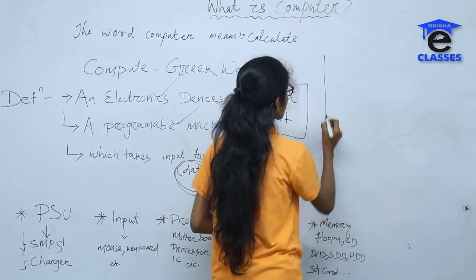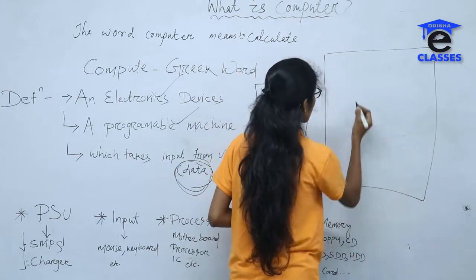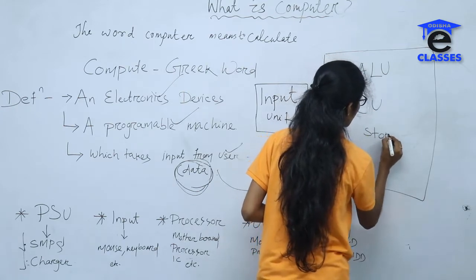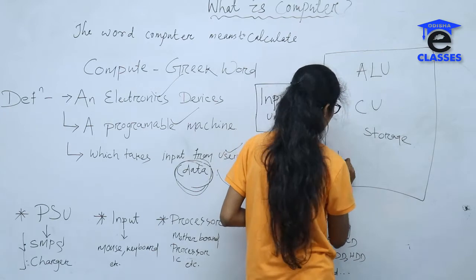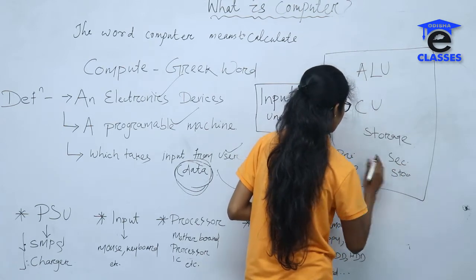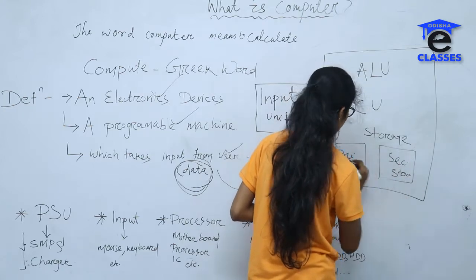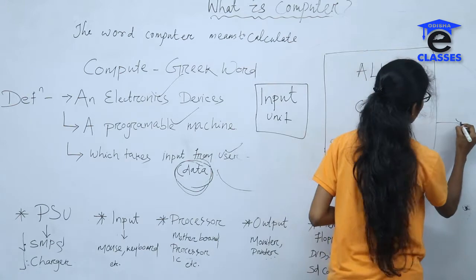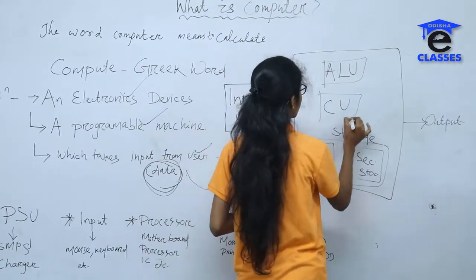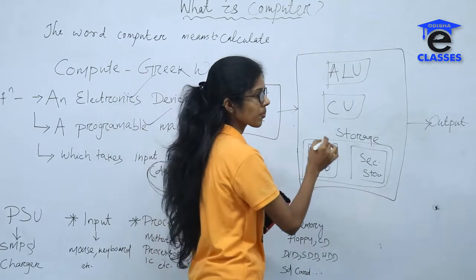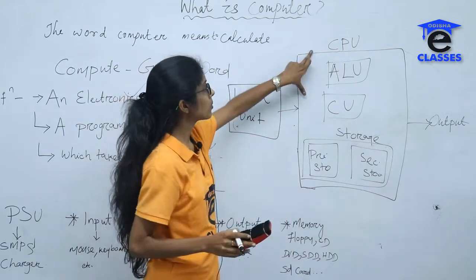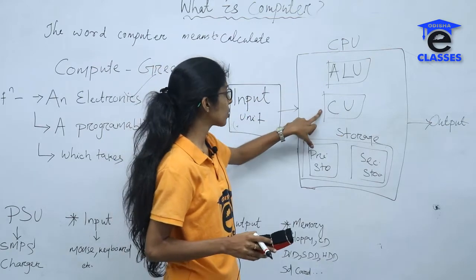Next is the block diagram of a computer. We have the input unit, then the processing unit. Input goes through to the CPU — the Central Processing Unit. The CPU mainly has three parts: ALU (Arithmetic Logic Unit), CU (Control Unit), and Storage.